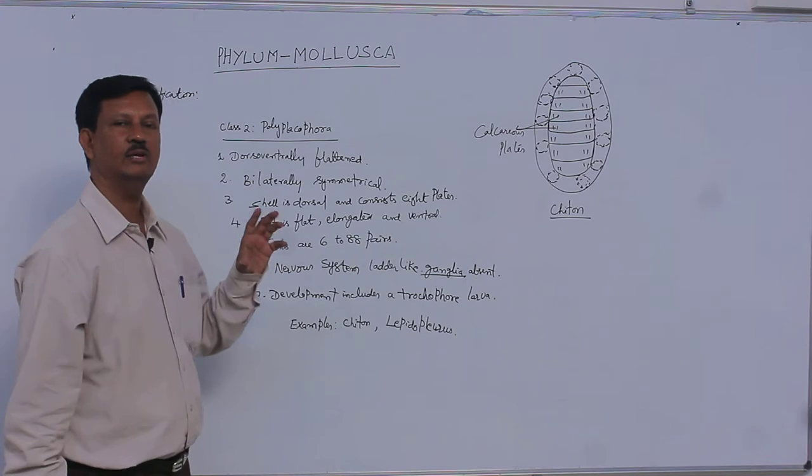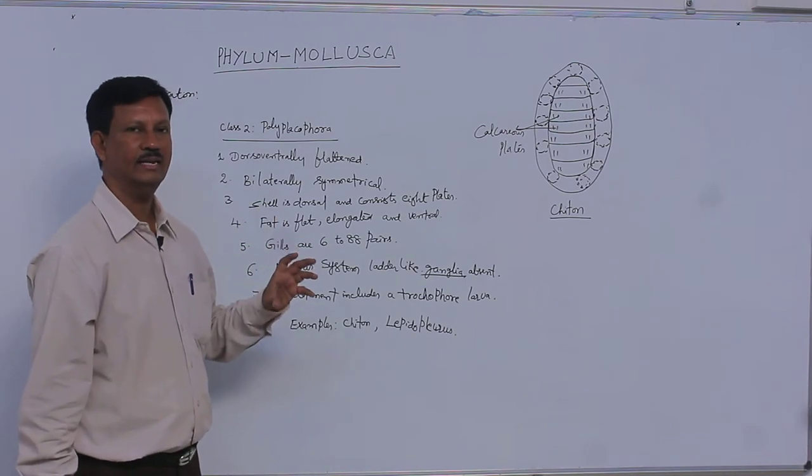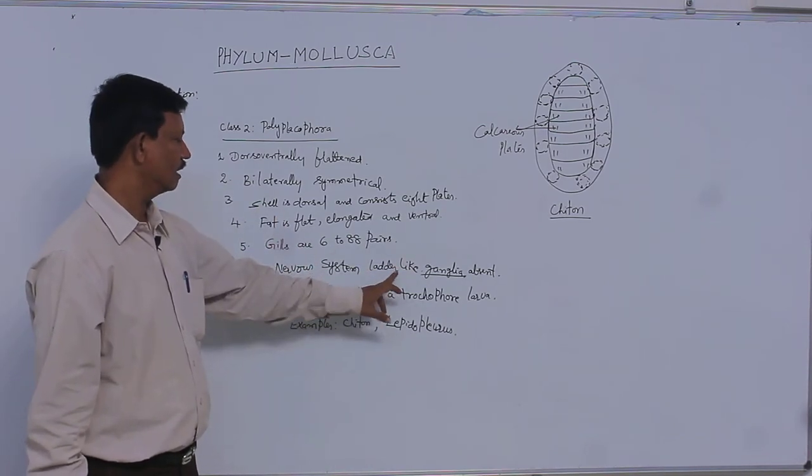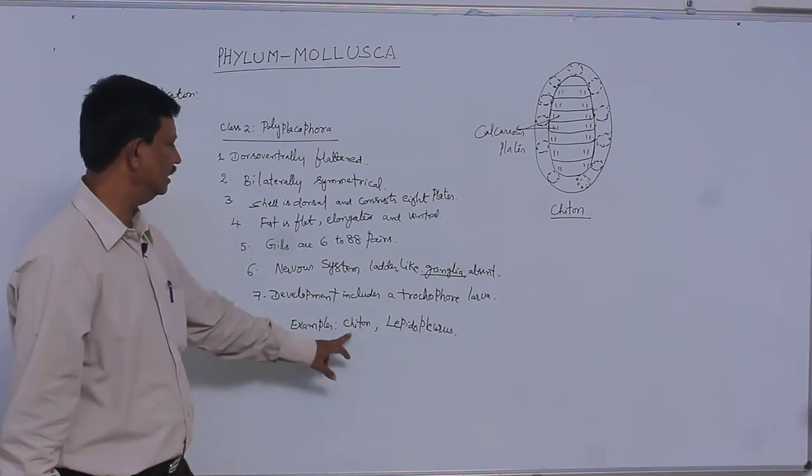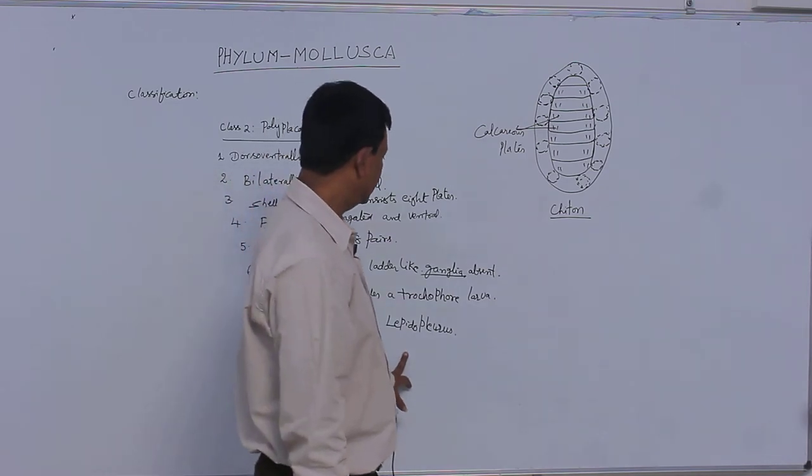A group of nerves are accumulated and form ganglia, which is absent in this class. Development includes a tropophore larva. And examples are the chiton and lepidophorus.